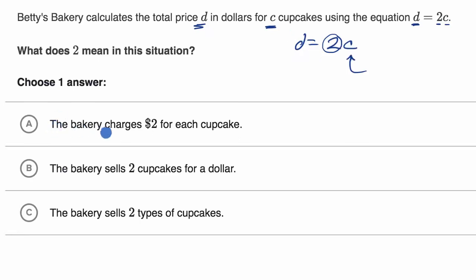Let's see, choice A says the bakery charges $2 for each cupcake. Yeah, that's pretty close to what I just said. So I'll go with that one. The bakery sells two cupcakes for a dollar. No, that would not be the case, and you could even try it out.